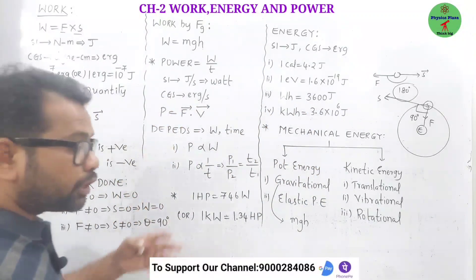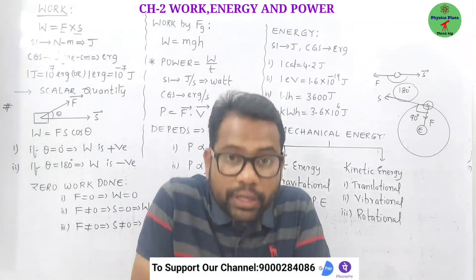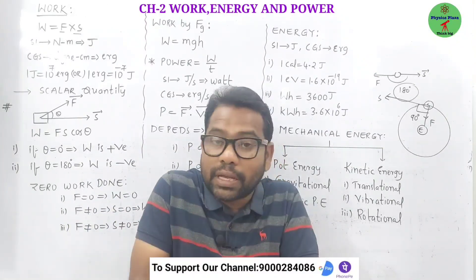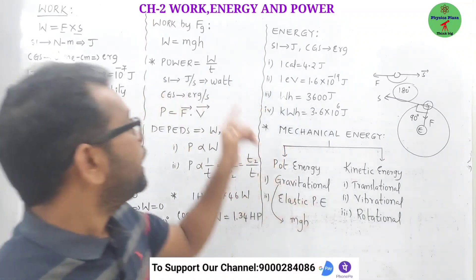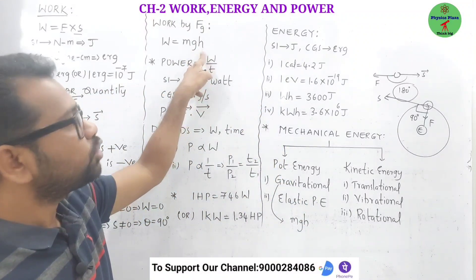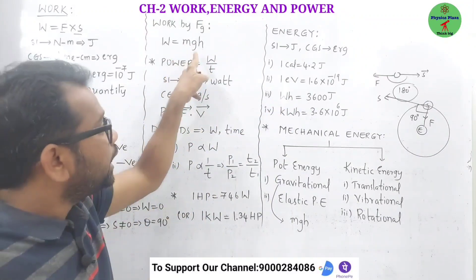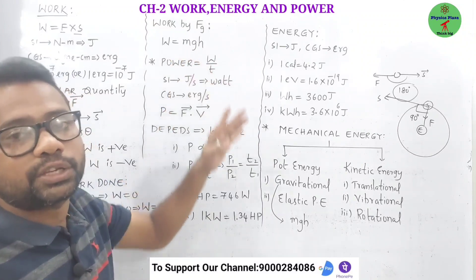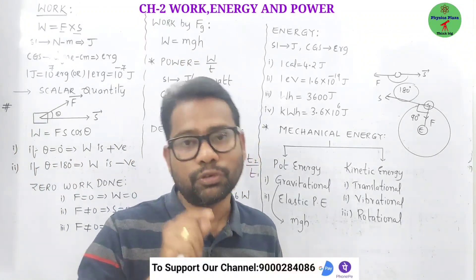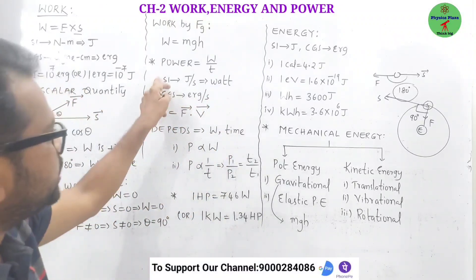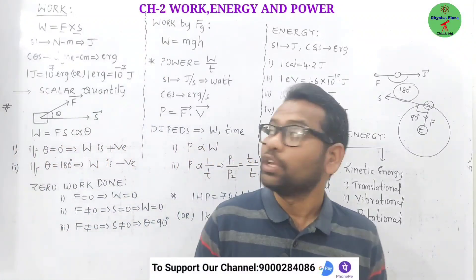How do we measure work done by the gravitational force? When lifting a body against gravity, the work done is measured by the formula mgh — where m is the mass of the body, g is the acceleration due to gravity, and h is the height to which the body is lifted. So mgh is the expression to calculate work done by the gravitational force.